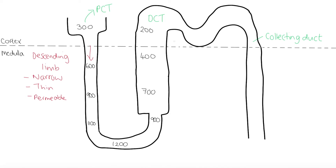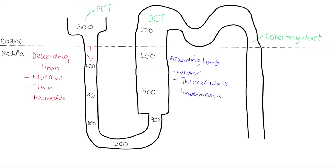On the other side we have the ascending limb. The ascending limb is wider, it has thicker walls, and it is impermeable to water. That means any water in the filtrate is unable to move out of the ascending limb through the walls.